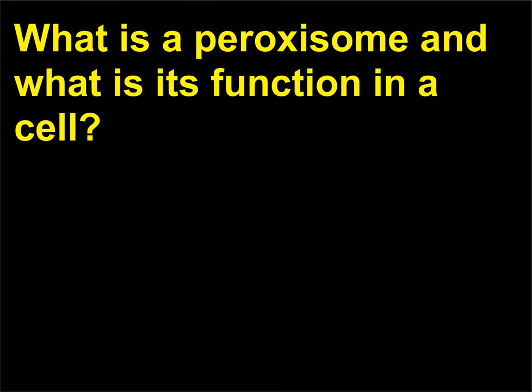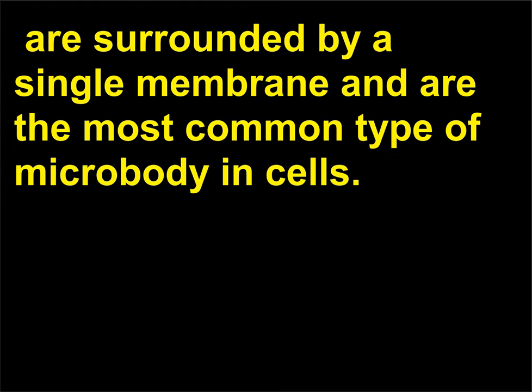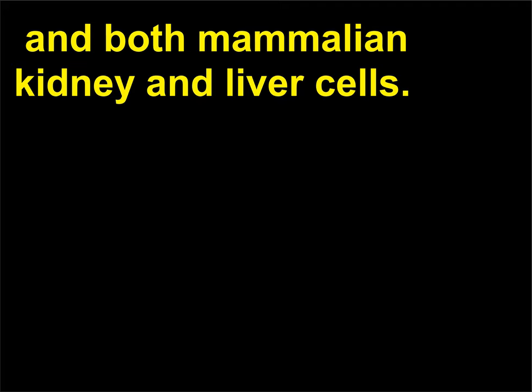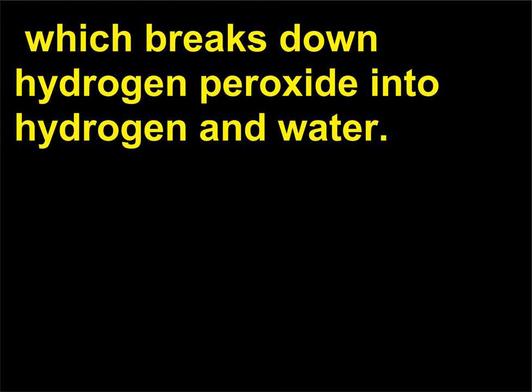What is a paroxysome and what is its function in a cell? Paroxysomes, also discovered by Christian de Duva, 1917, are surrounded by a single membrane and are the most common type of microbody in cells. They are especially prominent in algae, the photosynthetic cells of plants, and both mammalian kidney and liver cells. Paroxysomes contain detoxifying enzymes and produce catalase, which breaks down hydrogen peroxide into hydrogen and water.